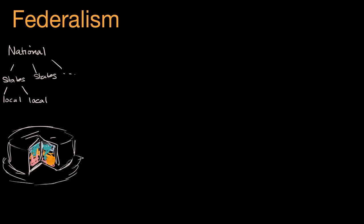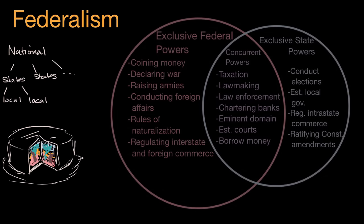Different layers of our federal government have exclusive powers, which means that's the only layer that has them, while sometimes there are concurrent powers, which means these are powers that multiple layers might actually have. To appreciate what these exclusive and concurrent powers are, here's a Venn diagram that shows some of them.